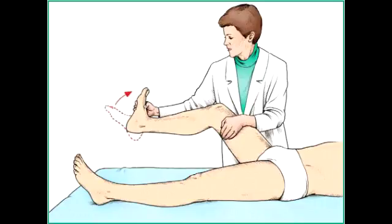What drug is used in the acute management and prevention of deep vein thrombosis? Heparin is used for the prevention and acute management of deep vein thrombosis. For long-term prevention of deep vein thrombosis and its recurrence, the drug used is warfarin.